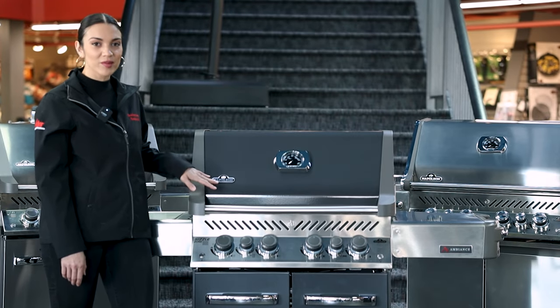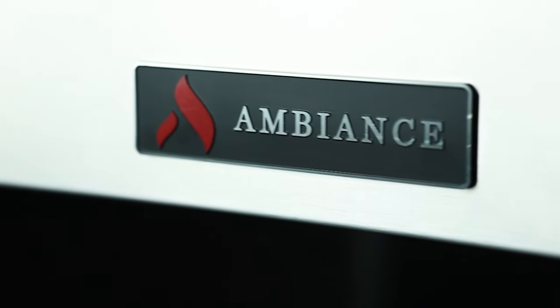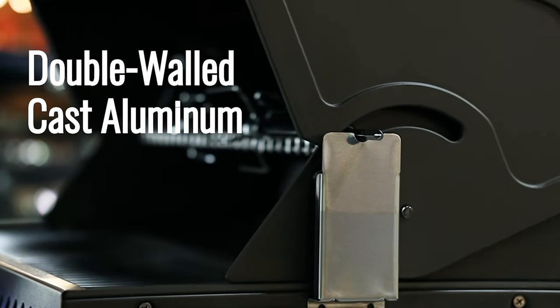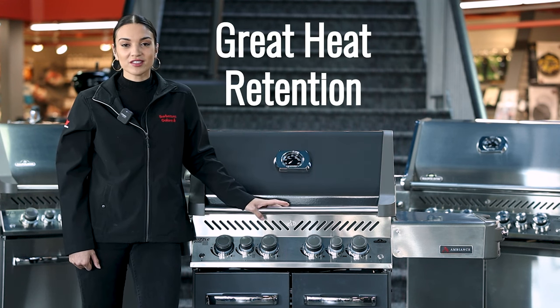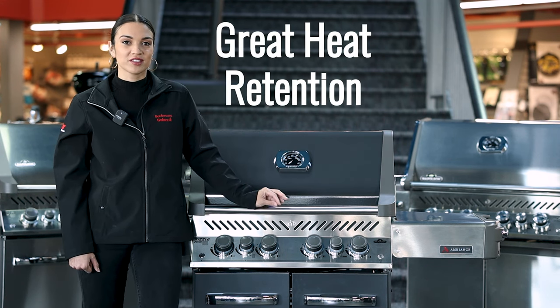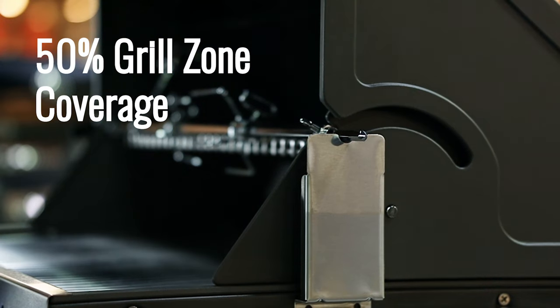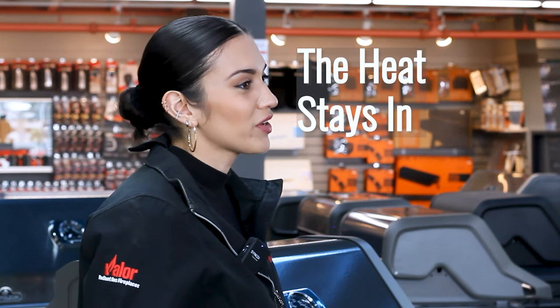You'll find the classic Napoleon emblem on the left side of the lid, as well as the exclusive Ambiance badge right here on the right side shelf. This barbecue features a double-walled cast aluminum cookbox. The great thing about double-walled is it's great for freezing Canadian winters because it really holds the heat inside the barbecue. This lid also shelters 50% of your grilling zone when it's opened, allowing heat to stay in the cookbox while you're checking on your food.